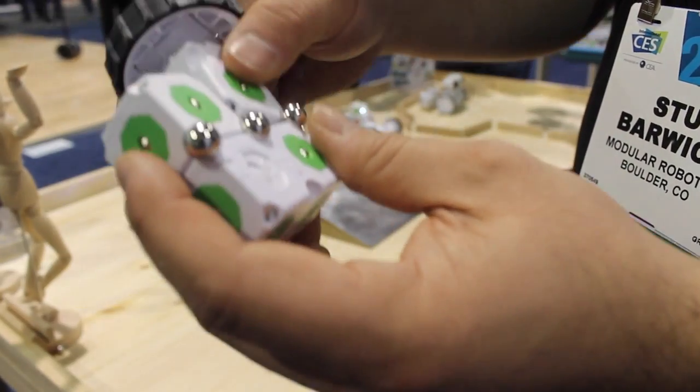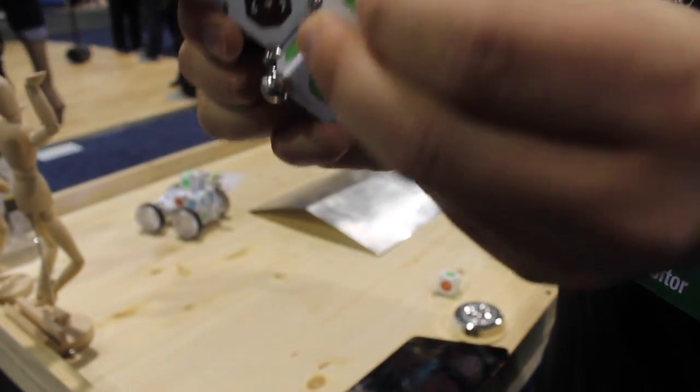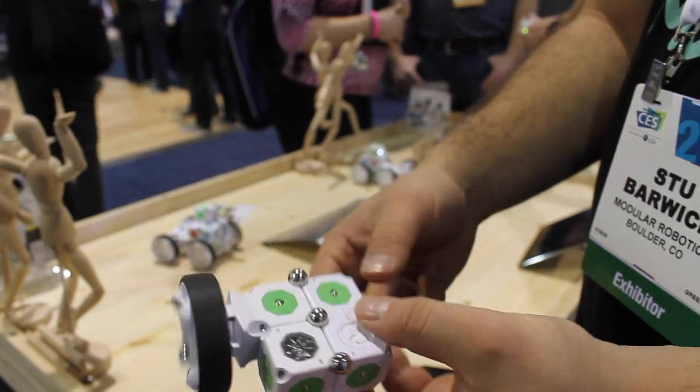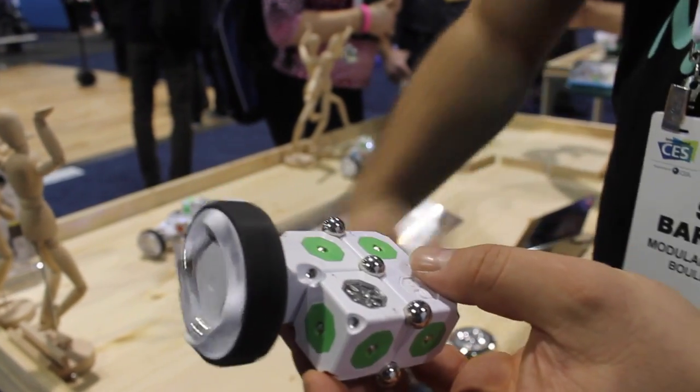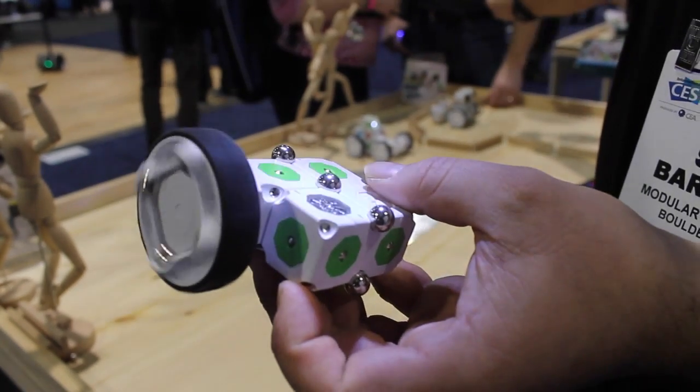So you can see here, by connecting three different blocks together, we've essentially created our first robot. This guy here is using a brightness sensor, and if we hit it with a flashlight, you can see how it's changing the direction of the wheel.